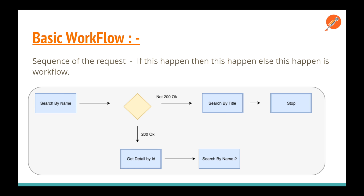For example, I have a 'Search by Name' request. If I get a 200 OK response, I do 'Get Detail by ID' because 'Search by Name' gives me a certain ID which I use in the second request. But if I don't get a 200 OK, I make another request — 'Search by Title.' If I get 200 OK from 'Get Detail by ID,' I do 'Search by Name' again and so on. This is my workflow, and it will be automated using Postman.